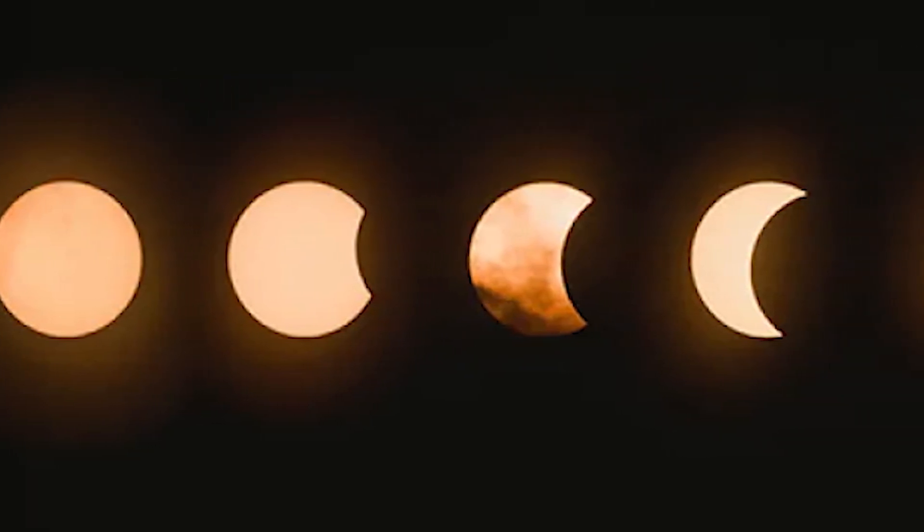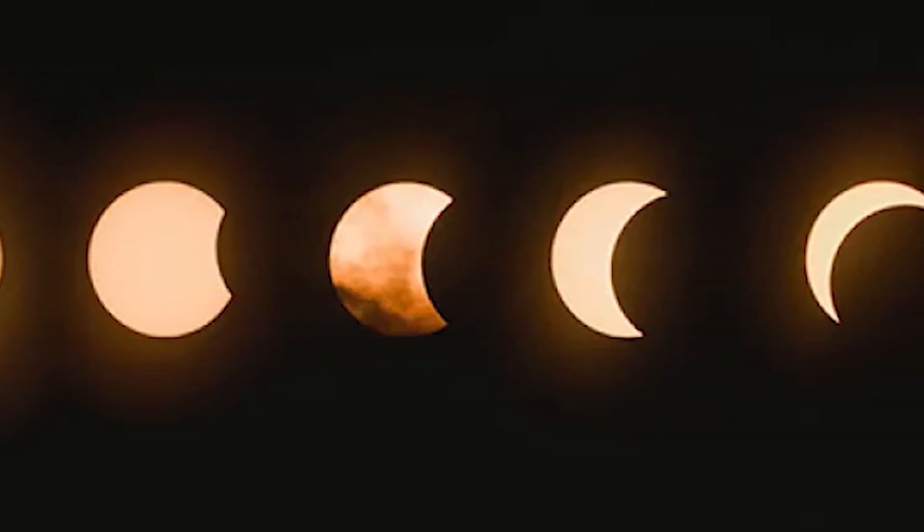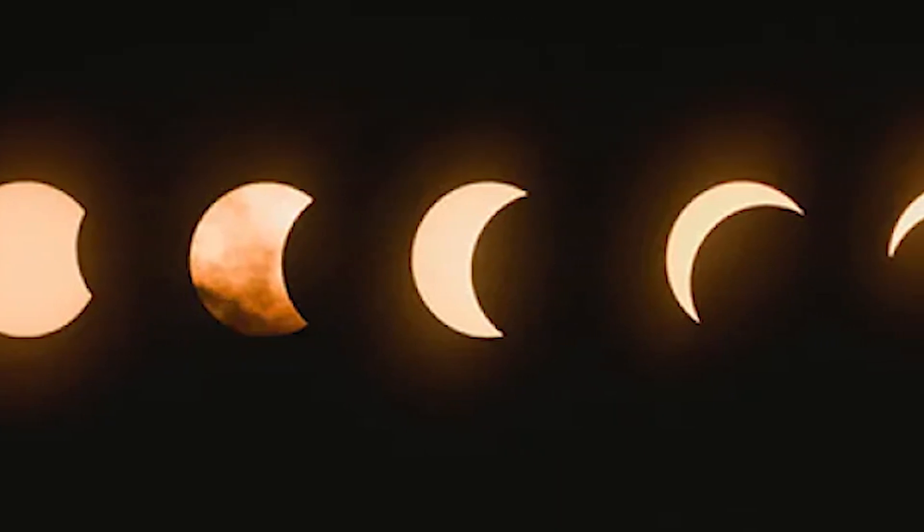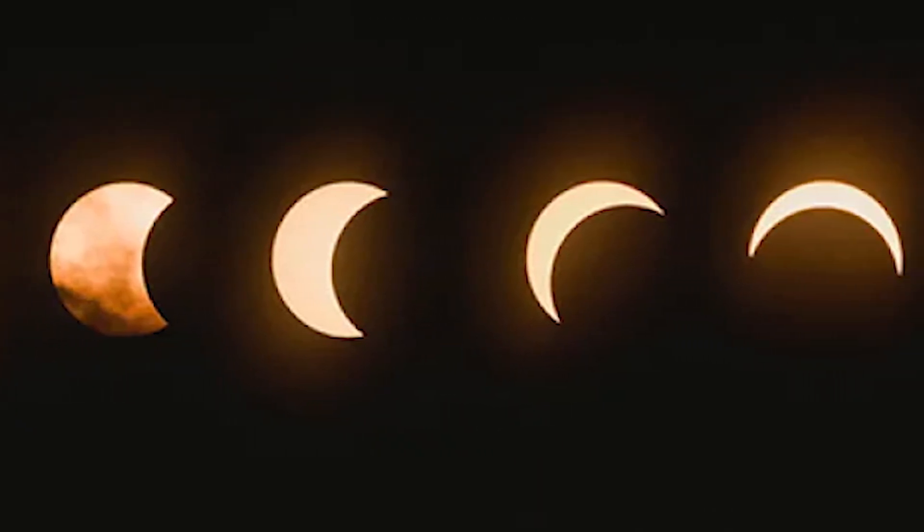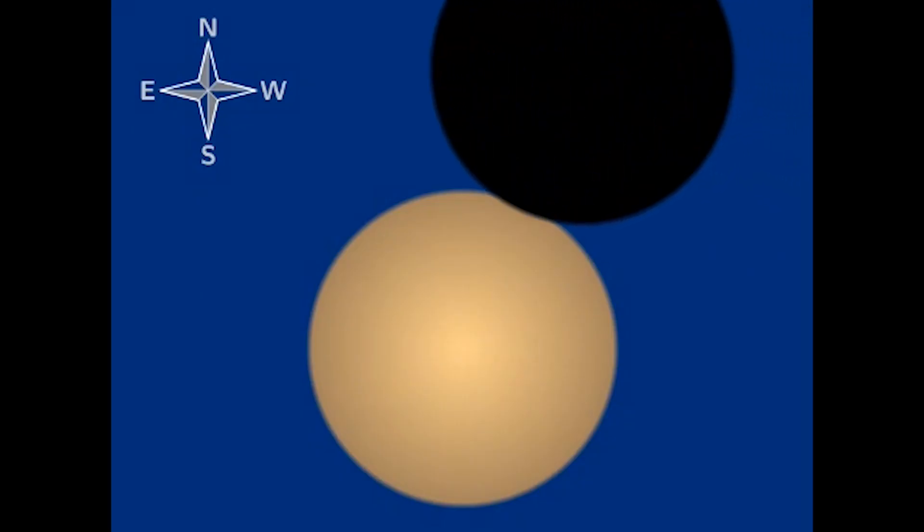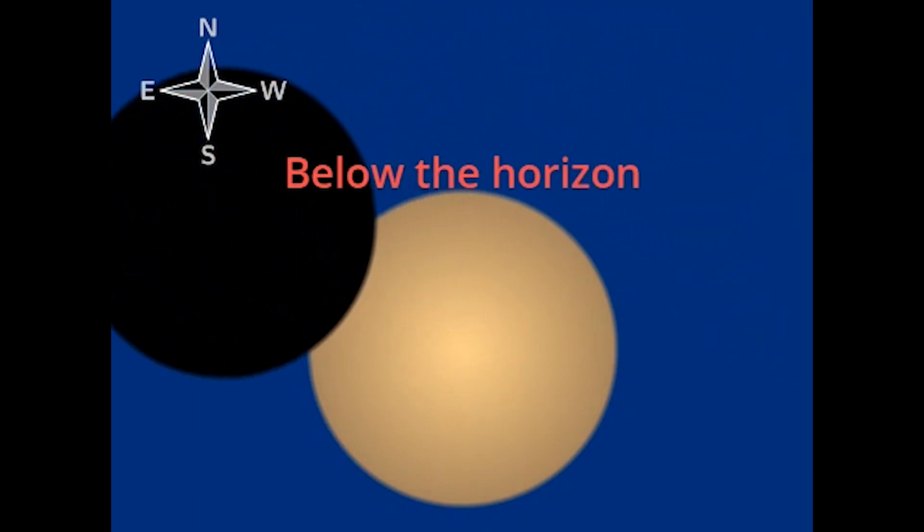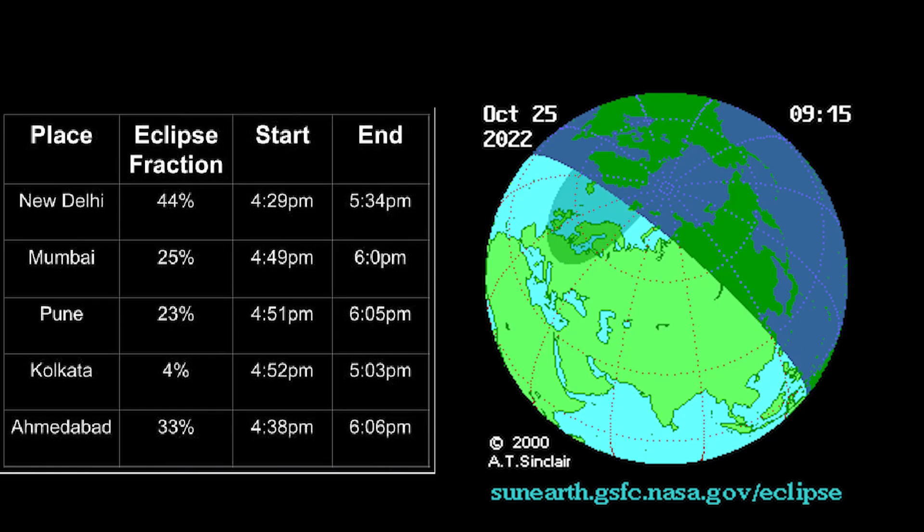On Tuesday, October 25, a partial solar eclipse will be visible from parts of Europe, Western Asia and Northeast Africa. The eclipse will start at around 4 pm and end at about 6 pm. In India, the north-western part will see the maximum eclipse.